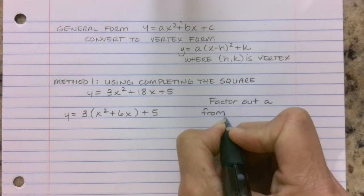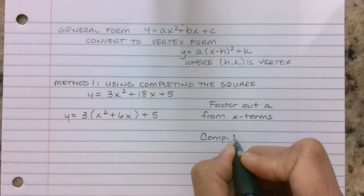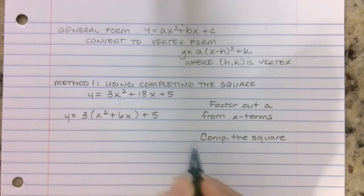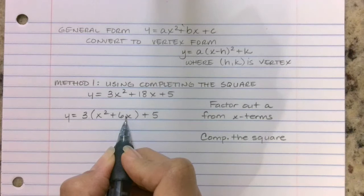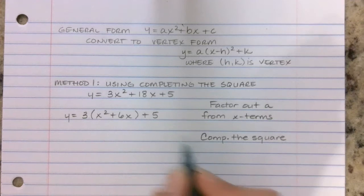After I have factored out the a from my x terms, I am going to next do the step of completing the square. So in your parentheses, you have a squared term, a bx term, and you're missing a constant. Completing the square is about inserting a brand new constant inside that parentheses to make this a perfect square trinomial.